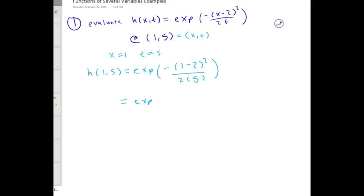We have the exponential of 1 minus 2 is negative 1, which when you square it is 1, which is times a negative from here. So we have minus 1 on top and we have 2 times 5, which is 10 on the bottom. Exponential function, you just take e to whatever is inside the function. We have e to the negative 1 tenth, and that's what h of 1,5 is.